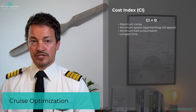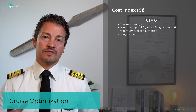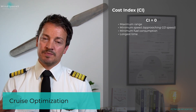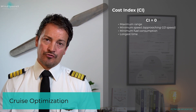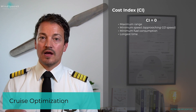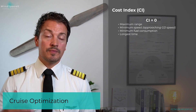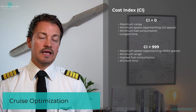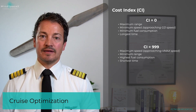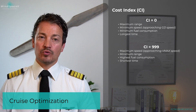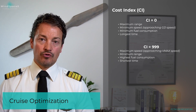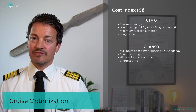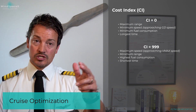The cost index goes from zero to 999. Inserting a cost index of zero gives you maximum range — you're flying at the minimum speed, and the speed will be approaching the green dot speed for the aircraft. This is also what we consider minimum fuel consumption; you are going to be reaching your destination in the longest possible time. On the other hand, if I were to insert a cost index of 999, the speed would be approaching the maximum speed V max for the aircraft. This gives minimum range because of a very high fuel burn-off, but I will be getting there in the shortest possible time.